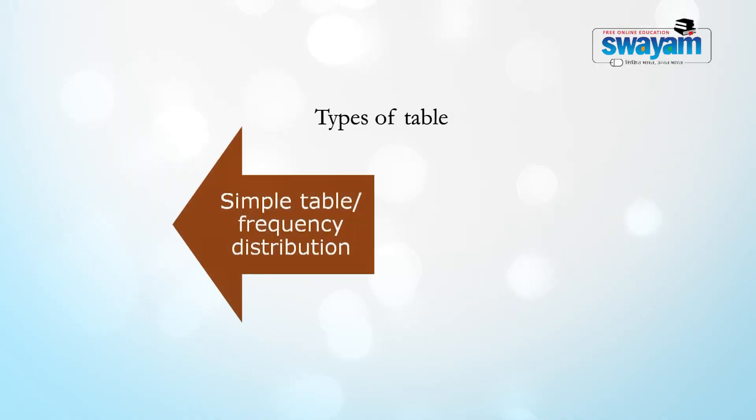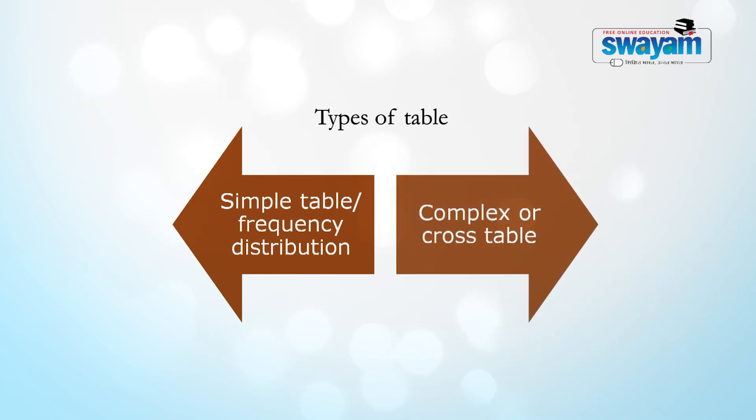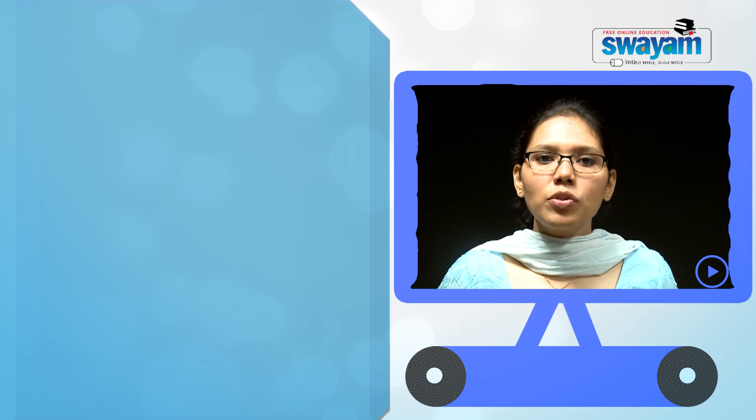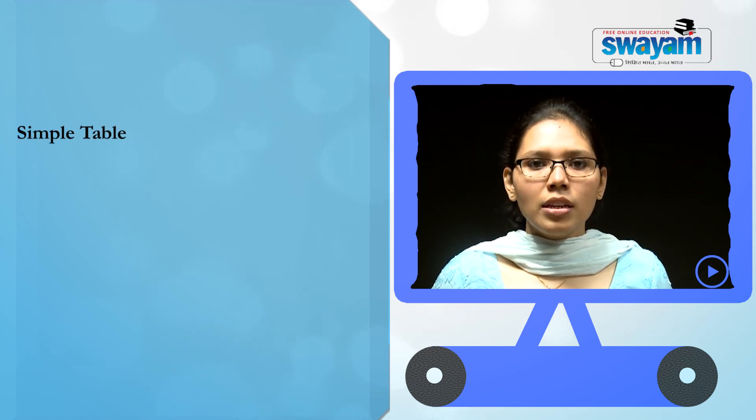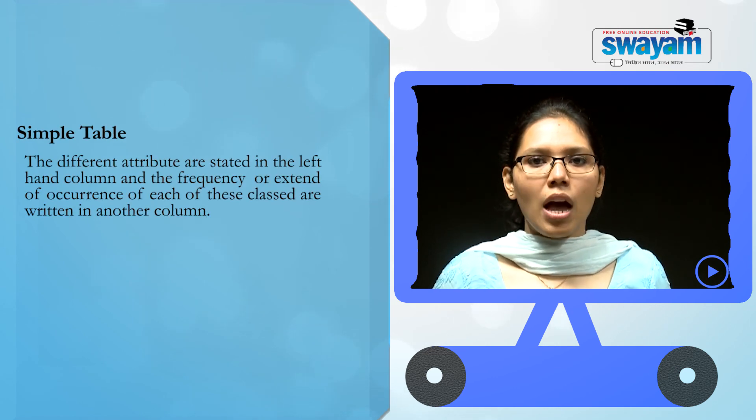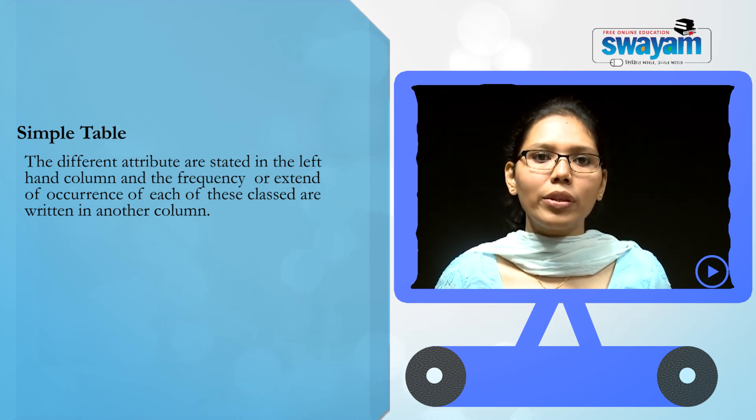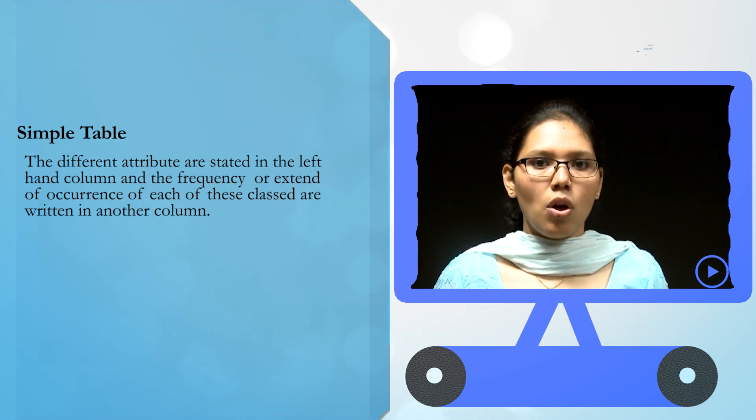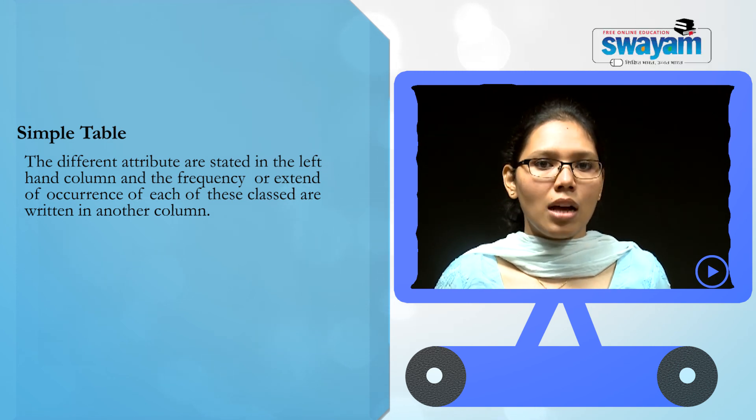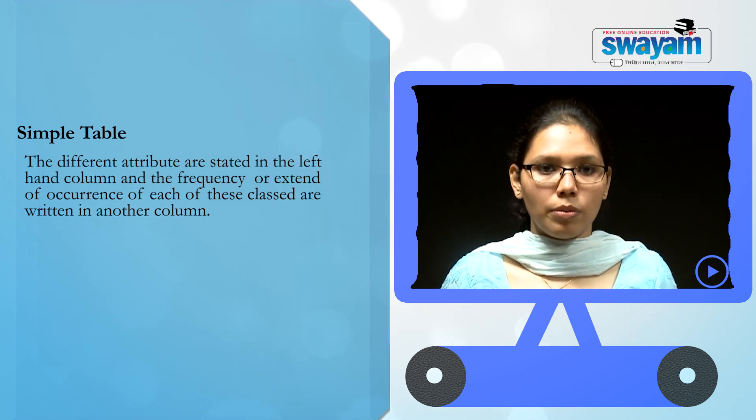Now, there are two types of tables. First is a simple, also known as frequency distribution, and second is a complex or cross table. Coming to a simple table, under it the different attributes are stated in the left-hand column, and the frequency or the extent of occurrence of each of these classes are written in the other column.